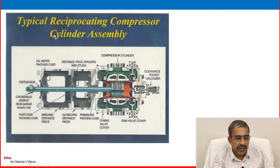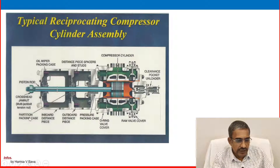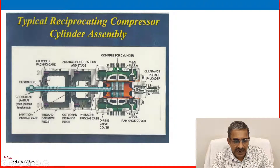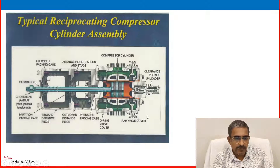This is a typical reciprocating compressor cylinder assembly. You can see the piston rod, cross head, and partition packing case, inboard casing distance piece, outboard distance piece, and pressure packing case. The compressor suction and discharge valves are visible — valve one, two, three, four. This is a two-stage compressor. You can also see the compressor cylinder, the ram valve cover, and the clearance pocket unloader.